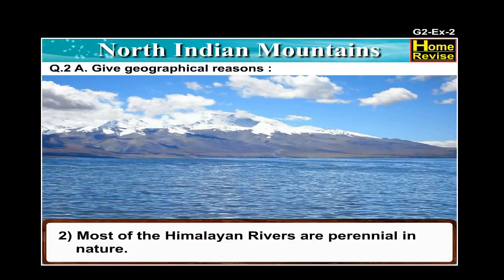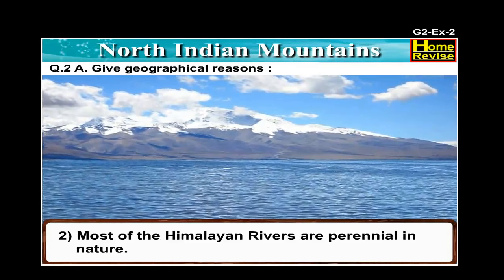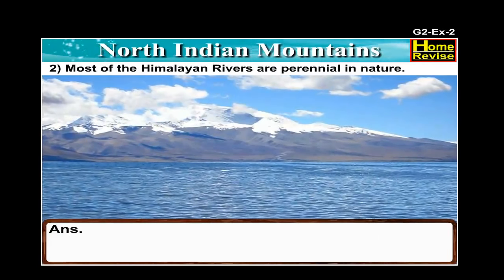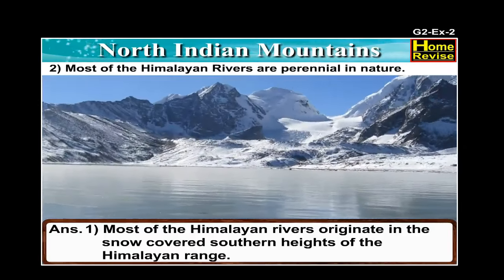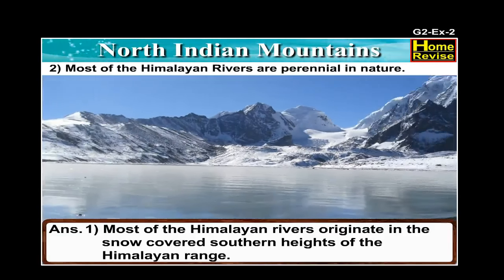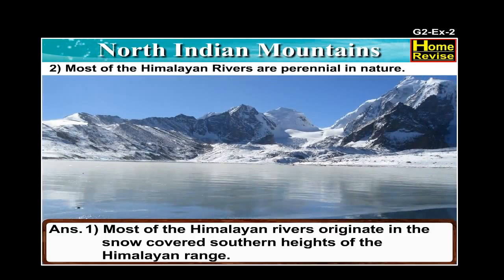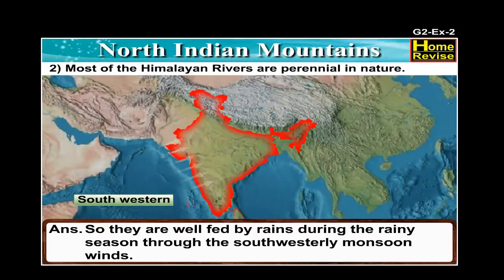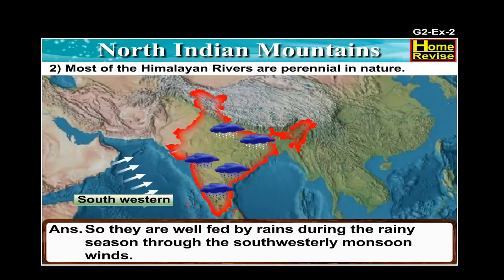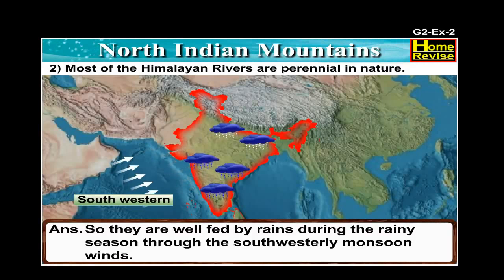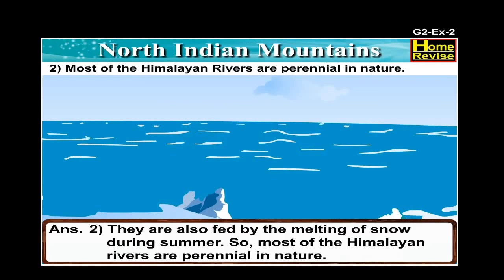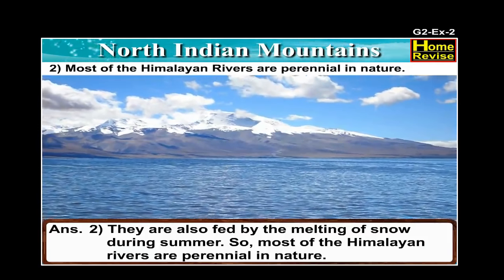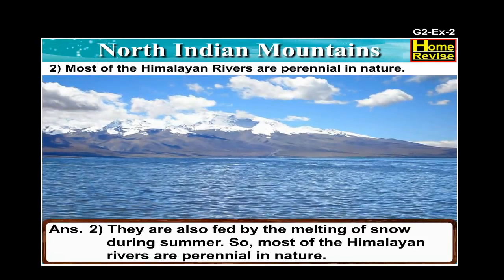Number two: Most of the Himalayan rivers are perennial in nature. Most of the Himalayan rivers originate in the snow-covered southern heights of the Himalayan range, so they are well fed by rains during the rainy season through the south-westerly monsoon winds. They are also fed by the melting of snow during summers. So most of the Himalayan rivers are perennial in nature.